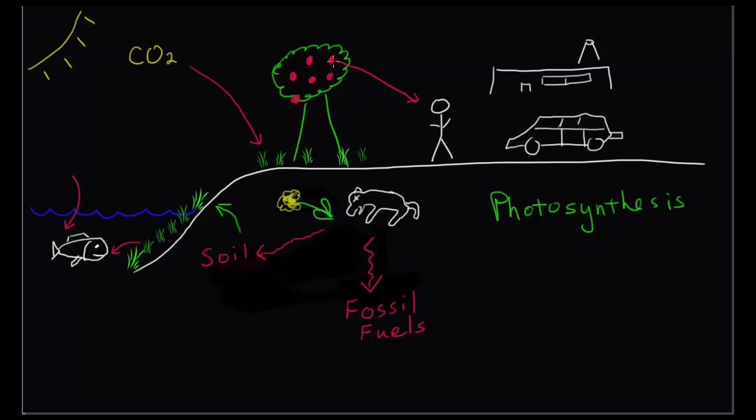Also we see an apple being eaten by this person and some plant life being eaten by this fish. And that carbon that is within those organisms are going to go into the human and go into the fish. And that's the process of consumption, consuming food.